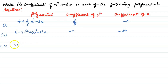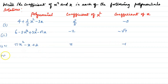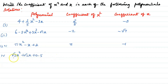Third: πx² - x + 2. The coefficient of x² is π and the coefficient of x is -1. Fourth: √3 x² + √2 x + 0.5. The coefficient of x² is √3 and the coefficient of x is √2.